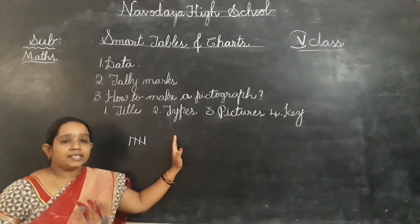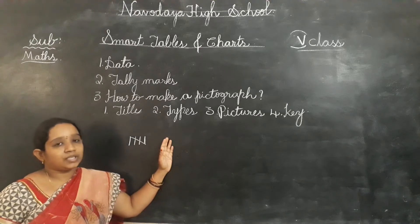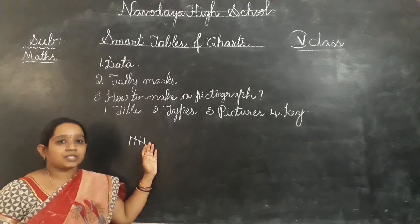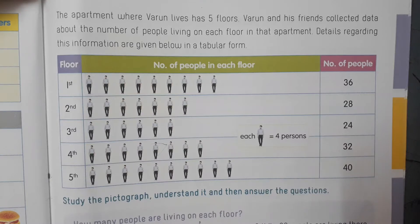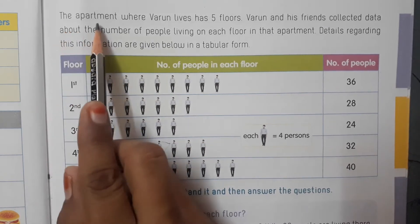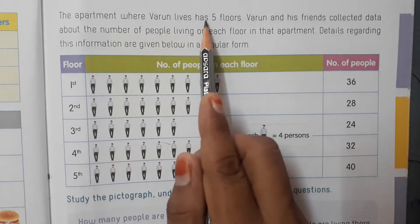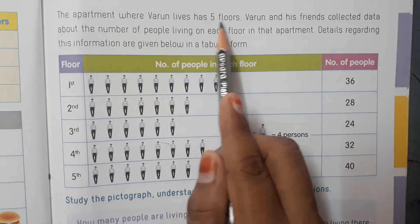Up to here we have learned in the previous class. Now today we are going to learn another example about pictograph and the next concept. Open your course book, page number 47. Here is another example about pictograph. The apartment where Varun lives has five floors.